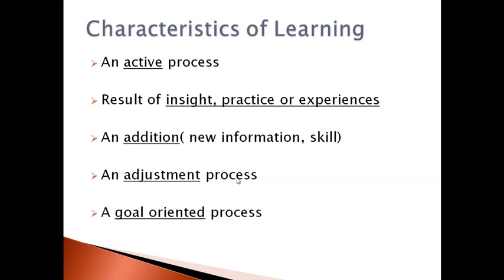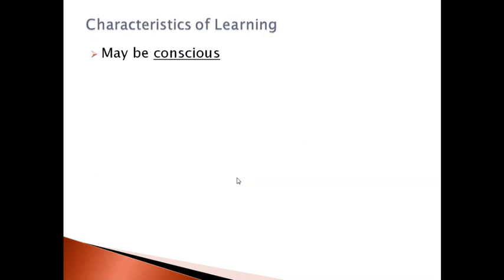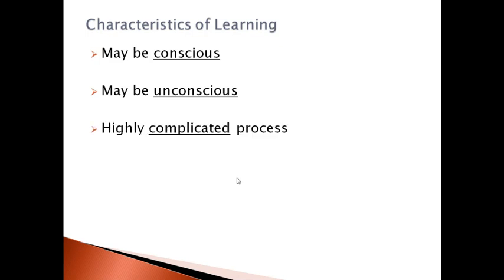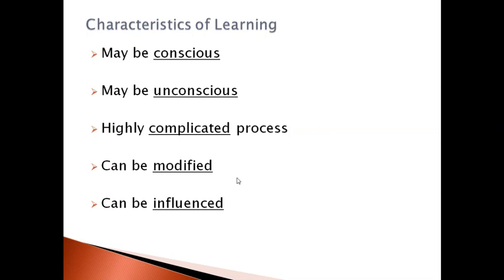Learning must be a goal-oriented process — we must determine a goal and learning helps to achieve that goal. Sometimes learning can be conscious and sometimes it can be unconscious — we can learn something new from the unconscious mind. Learning is a highly complicated process, and it can be modified and influenced.